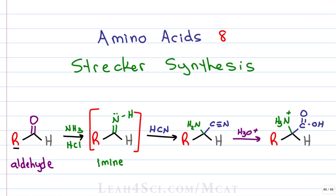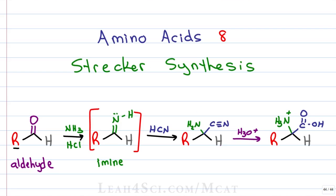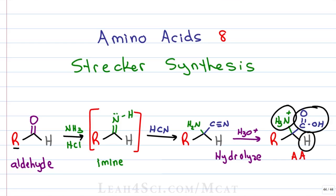In the next step, we add aqueous HCN — you'll see this as CN minus or HCN, but the reactive part is the CN minus. This gives us an intermediate that has the nitrogen where we want it and a nitrile group, which we then hydrolyze in the final step to give us our amino acid. Note that this is our alpha carbon, and attached to it we have the four expected groups: the alpha hydrogen, alpha amine, alpha carboxy, and our amino acid side chain.